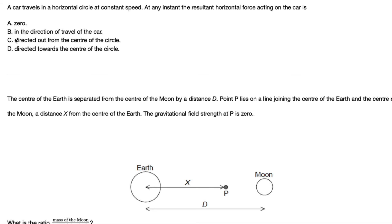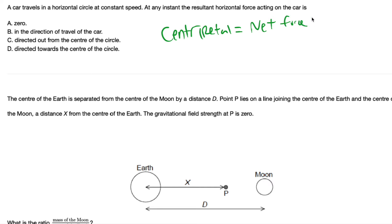A car travels in a horizontal circle at constant speed. At any instant, the resultant force acting on the object equals the centripetal force. The direction of the centripetal force is always directed towards the center of the circle. So D is the correct answer.